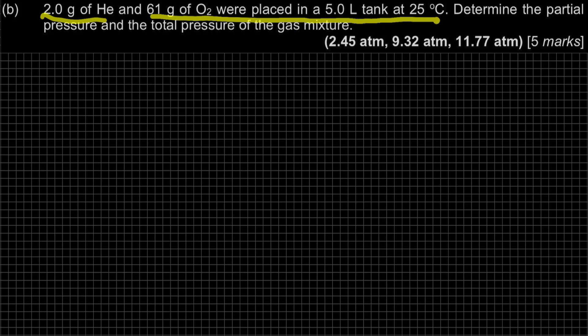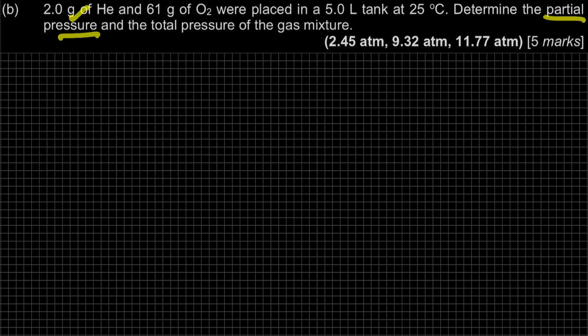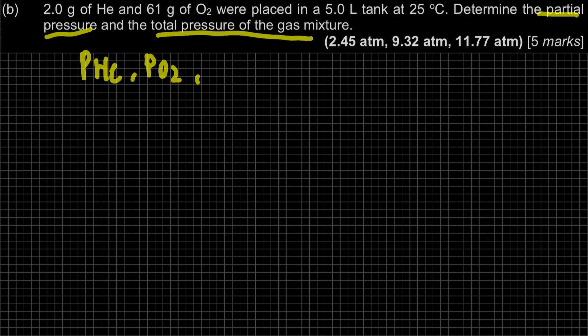For question B: 2 grams of helium and 61 grams of oxygen were placed in a 5-litre tank at 25 degrees Celsius. Determine the partial pressure and the total pressure of the gas mixture. Partial pressure means the pressure of each gas — so here, helium and oxygen. The question also asks for total pressure, so there are actually three parts inside question B.